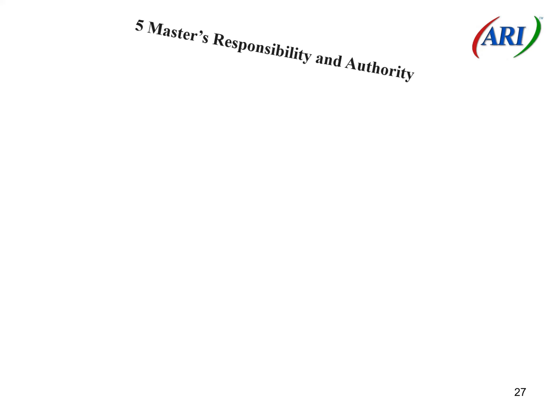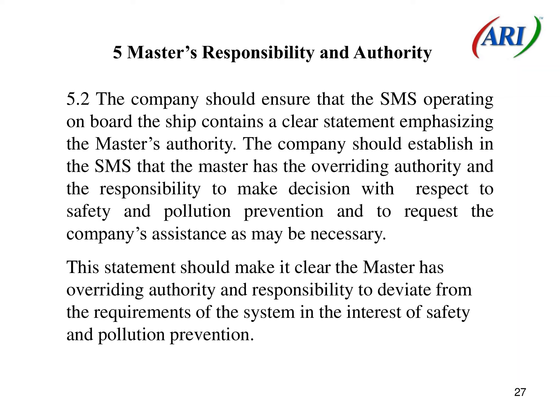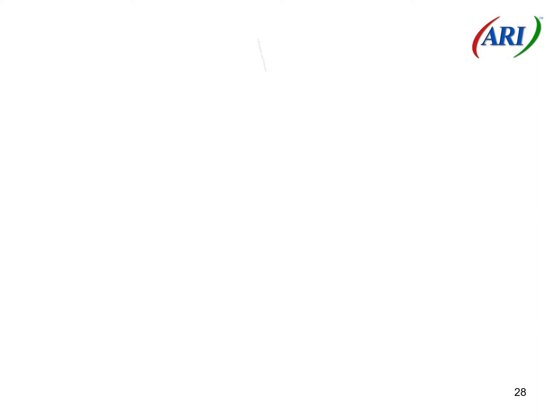5.2 The company should ensure that the SMS operating on board the ship contains a clear statement emphasizing the master's authority. The company should establish in the SMS that the master has the overriding authority and the responsibility to make decisions with respect to safety and pollution prevention and to request the company's assistance as may be necessary. This statement should make it clear the master has overriding authority and responsibility to deviate from the requirements of the system in the interest of safety and pollution prevention.